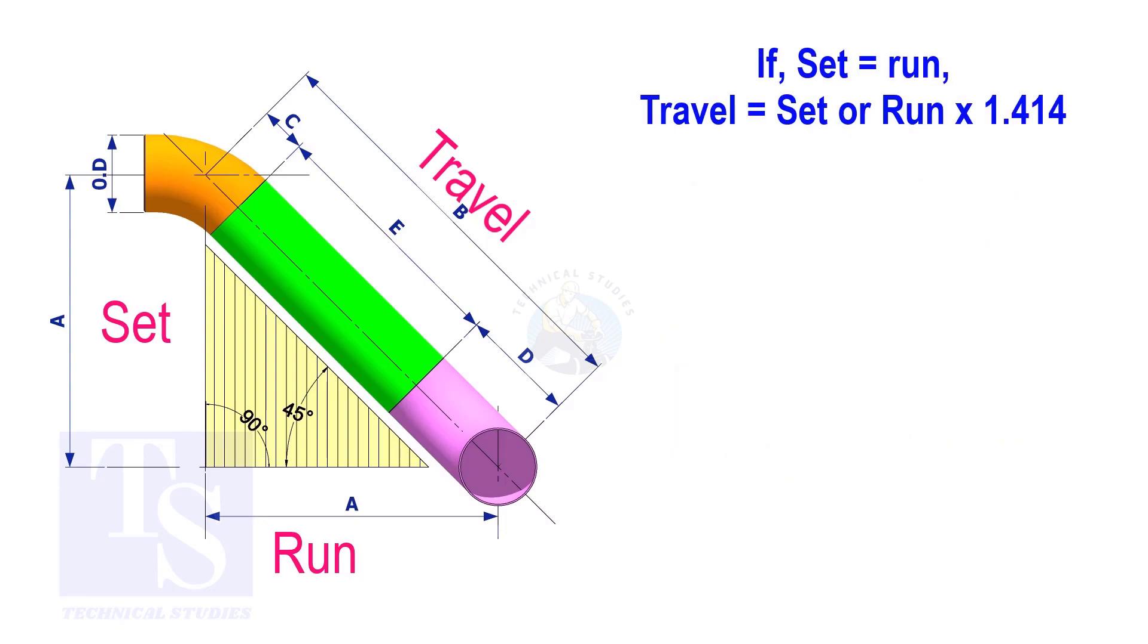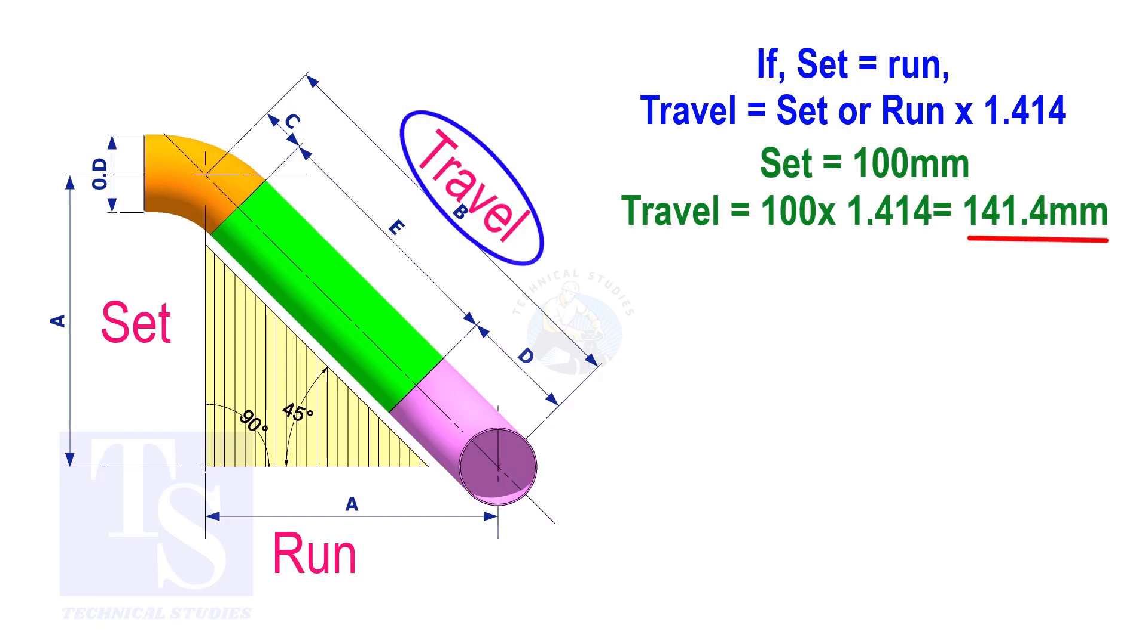Assume that the value of the set is 100. The value of the travel is 100 multiplied by 1.414 equals 141.4.